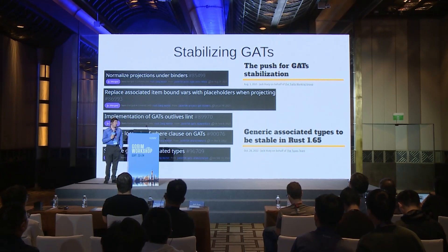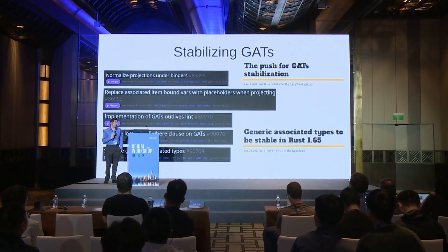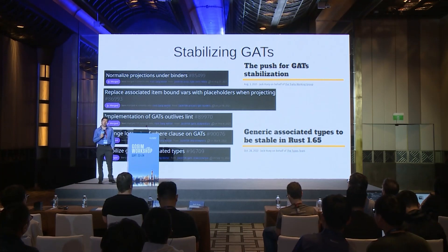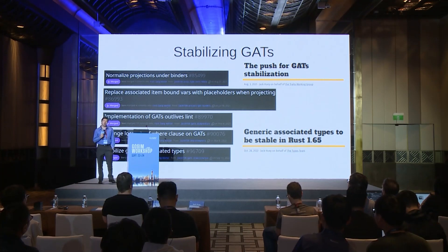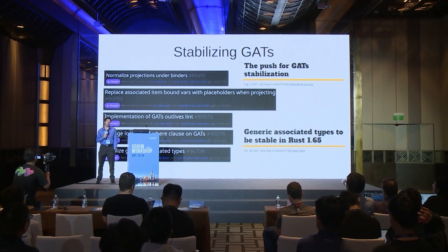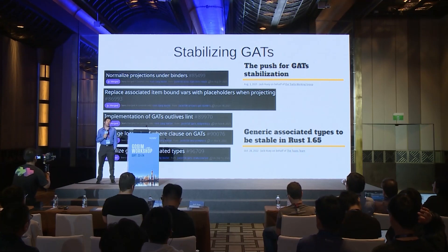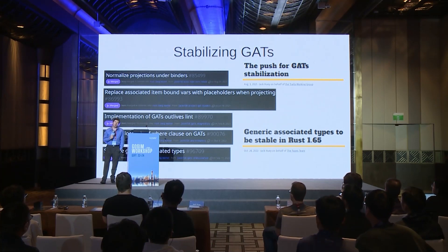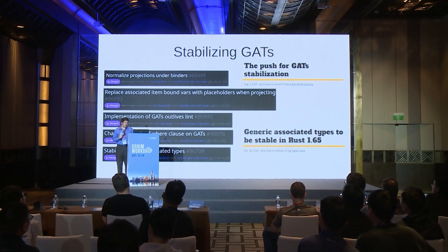After working on Chalk and the compiler, I switched gears to try to push to stabilize GATs. In late 2021, in August, we published a blog post saying we wanted to push to stabilize GATs. I naively put a timeframe of three to six months, and it took a lot longer than that. There were a number of big PRs solving different bugs and usability concerns, but they did get stabilized in October 2022 in Rust 1.65.